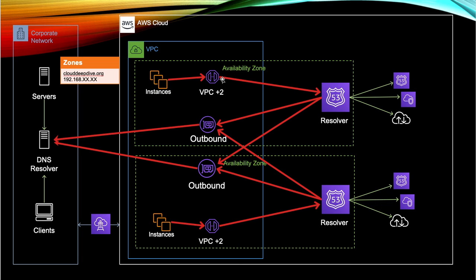For outbound endpoints, you again get ENIs in your subnets. An instance sends its query to VPC plus-2, which is your Route 53 Resolver. As mentioned, before checking private hosted zones, it checks the endpoints first. It goes to the outbound endpoint, and in the outbound endpoint we add rules — I'll show you in the demo what those rules look like and how they work. Based on the rule, the query is sent to your DNS resolver, which resolves it and sends the IP address back.